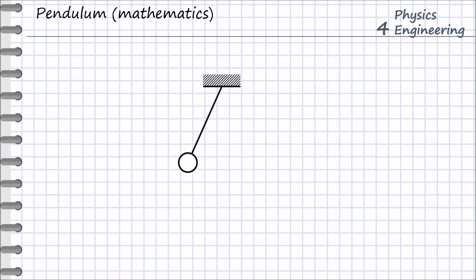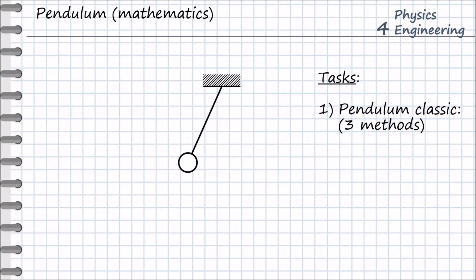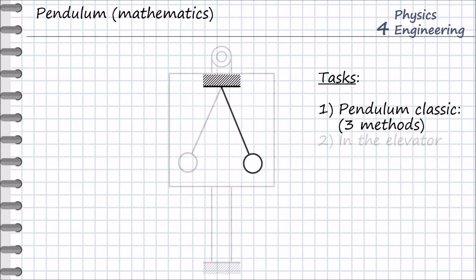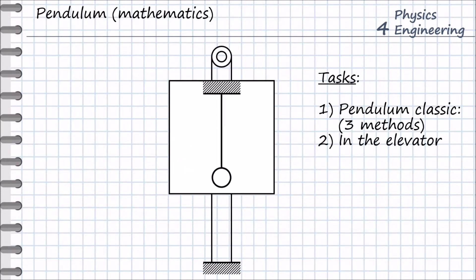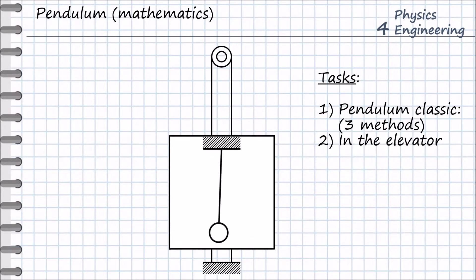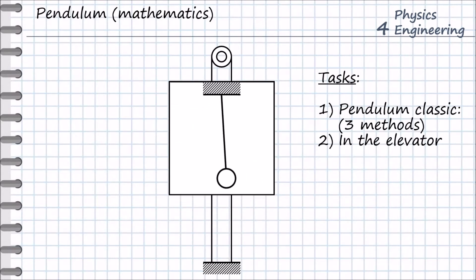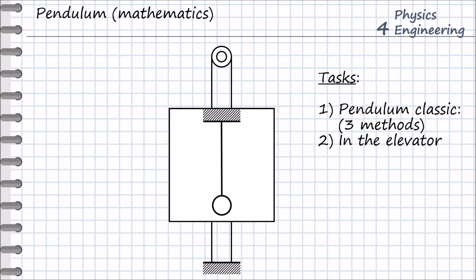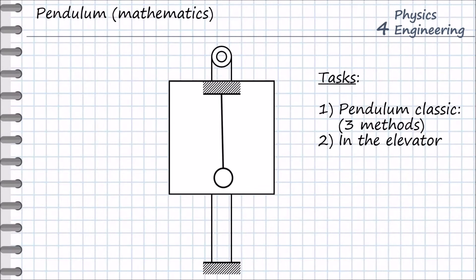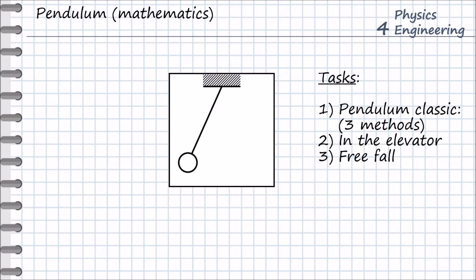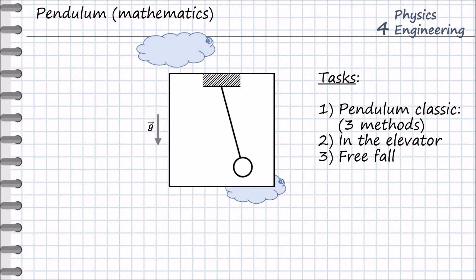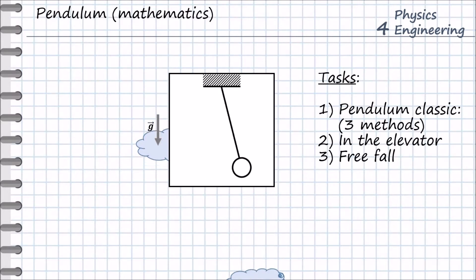Hello everyone. Our topic for today is the pendulum. The first task is to find the solution of the pendulum — we will use three different methods for this purpose. The second task is to solve the pendulum in an elevator when it moves linearly up and down with linear acceleration, and what this means for the pendulum behavior and oscillation frequency. The third task is the free fall of the pendulum — what happens when it falls down with gravitational acceleration.